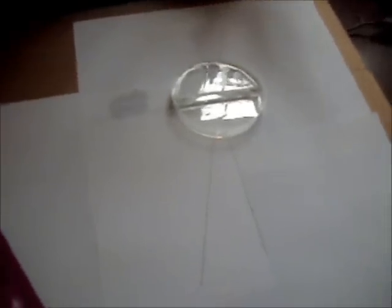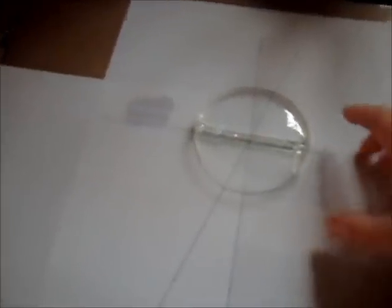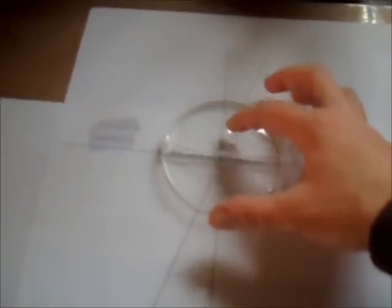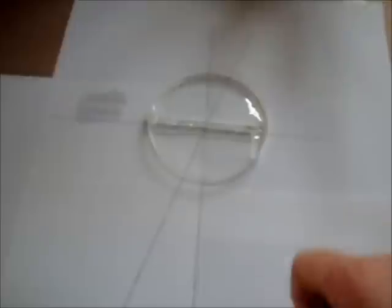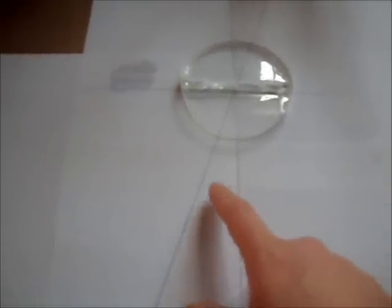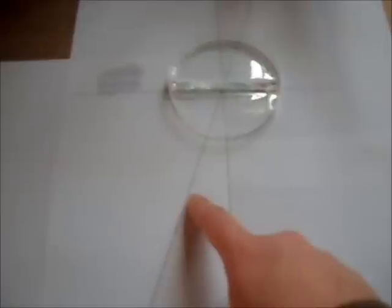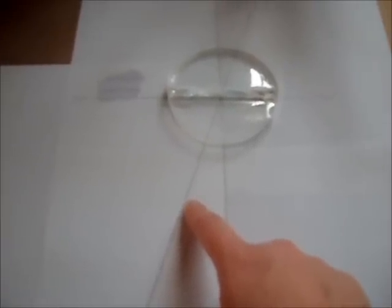Okay, now we're looking at the refraction index of water. This petri dish is half filled with water, half filled with air. I have a normal line with an incident angle of 20 degrees.